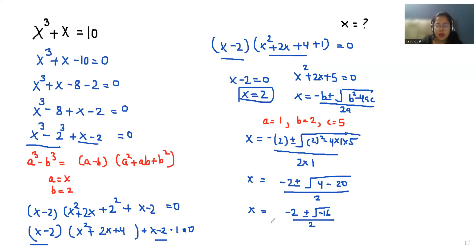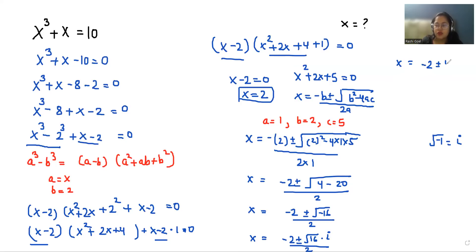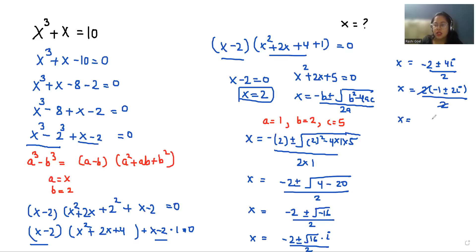Since square root of negative 1 equals iota, we can write this as negative 2 plus or minus square root of 16 times iota, all over 2. Since root 16 equals 4, this becomes negative 2 plus or minus 4 iota over 2. Taking 2 as common and cancelling, x equals negative 1 plus 2 iota or x equals negative 1 minus 2 iota.